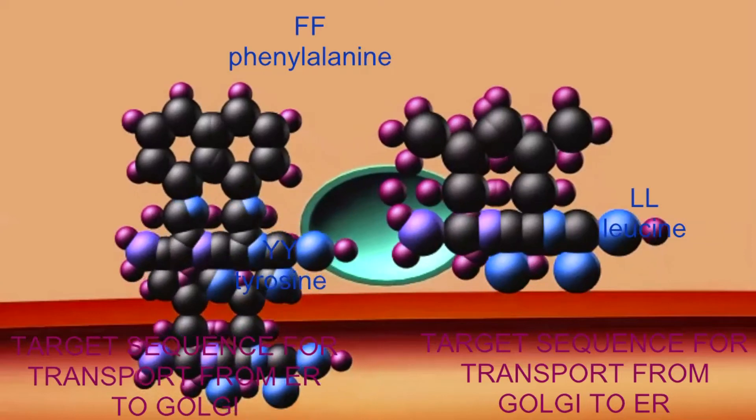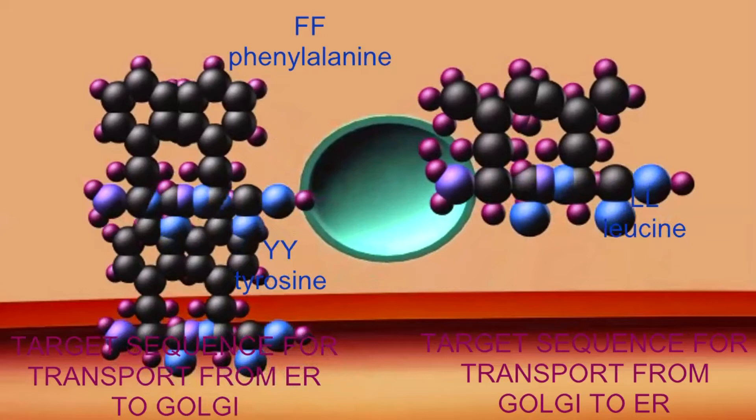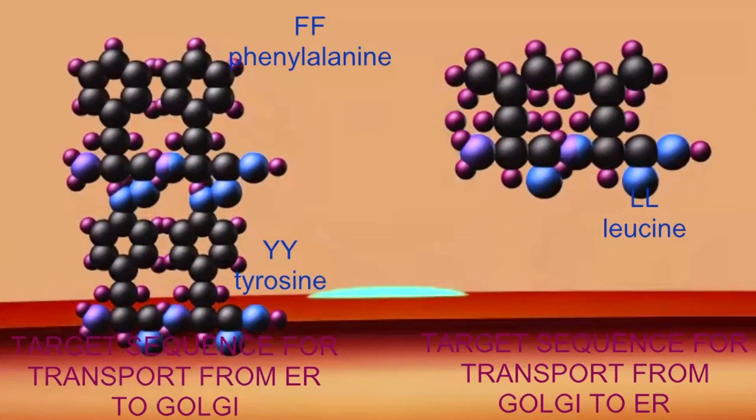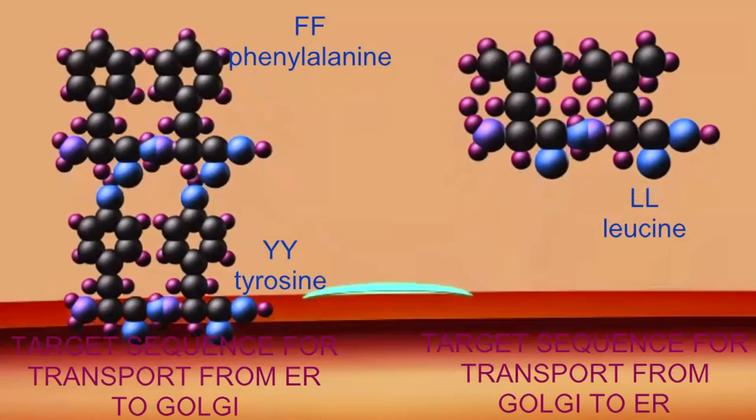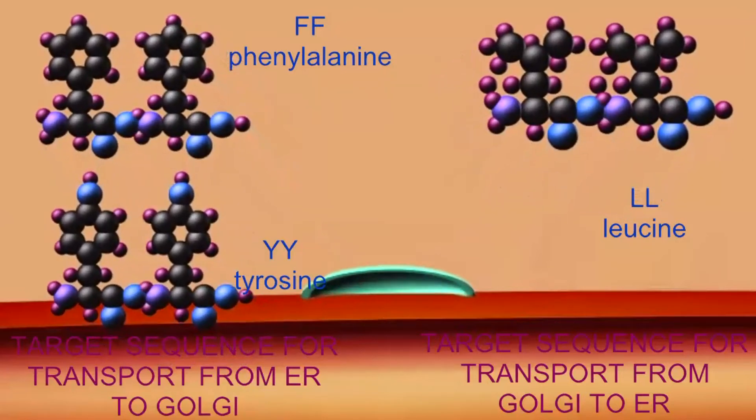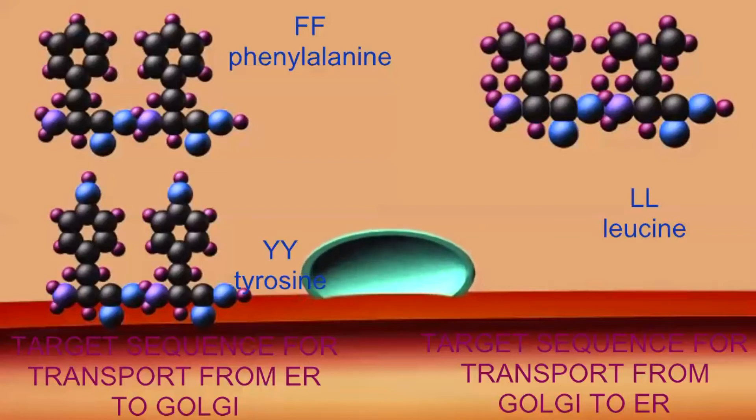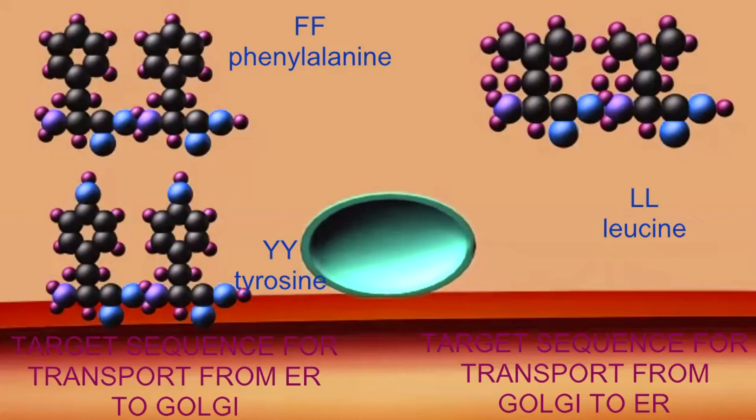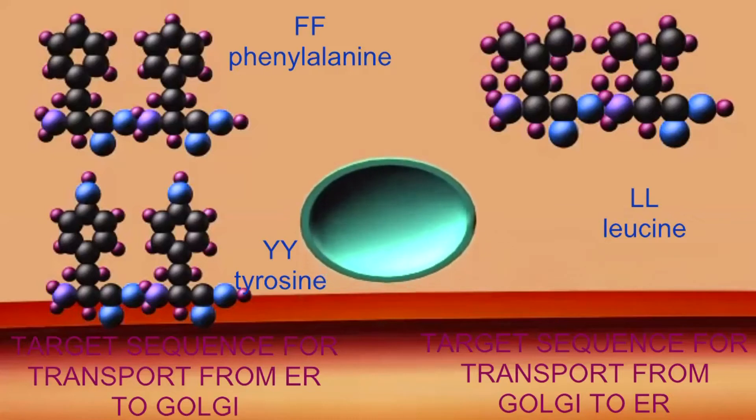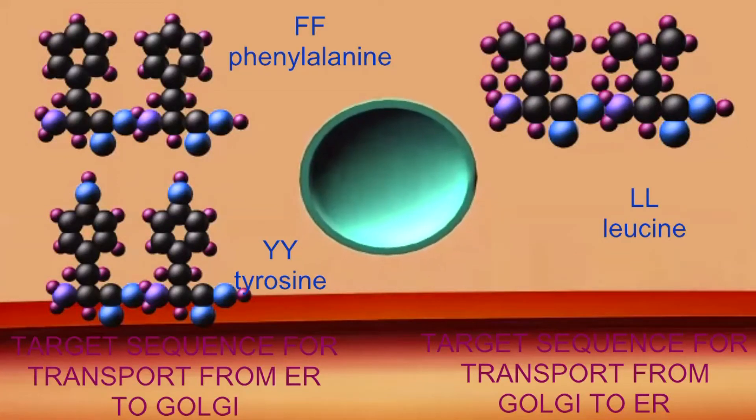Some proteins are packaged into vesicles at the ER exit sites and transported to the Golgi, while other proteins are packaged in the Golgi and undergo retrograde transport back to the ER. Proteins which possess two adjacent phenylalanine amino acids or two adjacent tyrosine amino acids can be packaged into vesicles heading towards the Golgi, while proteins which possess two adjacent leucine amino acids could be packaged in vesicles to go back to the ER.